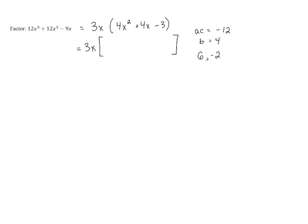Let's use those two numbers to rewrite that middle term. We're going to have that 4x squared still, but that 4x is now going to be a 6x and a negative 2x, still minus 3.